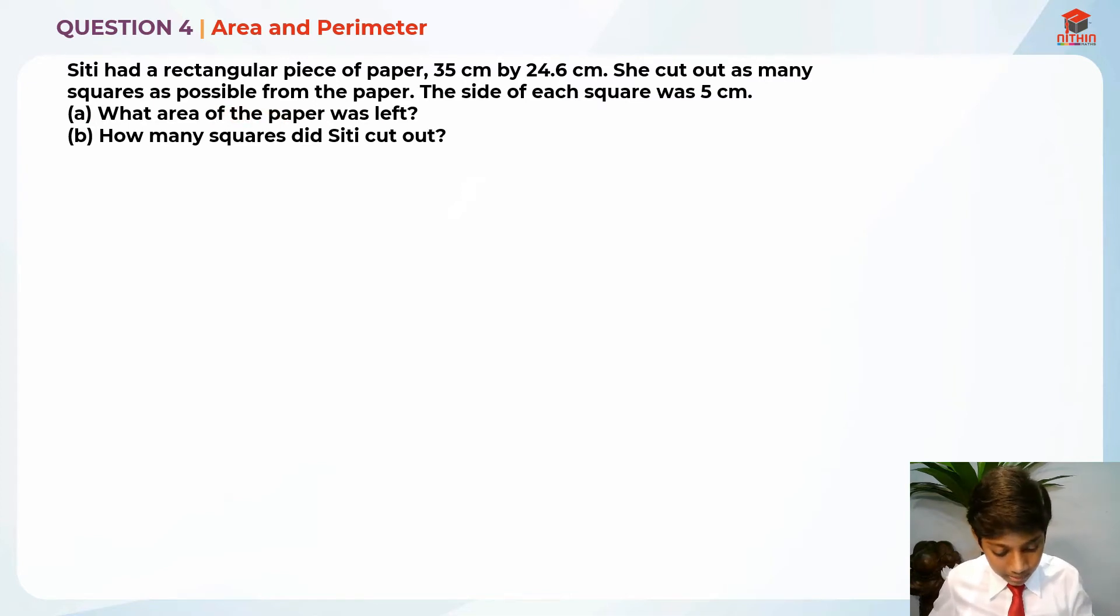Let's highlight the key information for part A. She had a rectangular piece of paper, 35 cm by 24.6 cm. She cut out as many squares as possible from the paper. The size of each square was 5 cm. What was the area of the paper left?